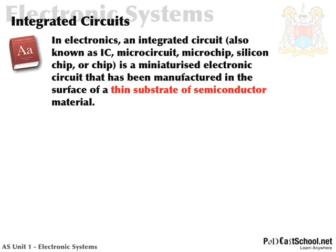In electronics, an integrated circuit — also known as an IC — you might have heard it called a microcircuit, a microchip, a silicon chip, or just a chip. It is a miniaturized electronic circuit that has been manufactured in the surface of a thin substrate of semiconductor material. A semiconductor is something which conducts some of the time and not other times, depending upon external factors. The word substrate you could just think of as a layer — a thin layer of semiconductor material.